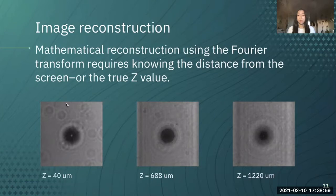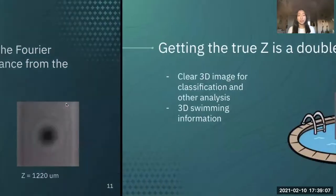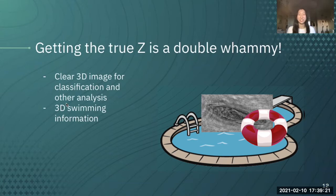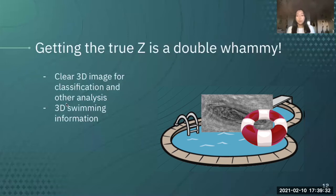On the other hand, if we overestimate the Z value, we could end up with something on the right, which is clearly also not a focused image. Getting the true Z is a double whammy because it allows us to get a clear 3D image which we can use for classification and other analysis. It also gives us the plankton's 3D swimming information. If we track its Z value over time, and we have the XY value from watching it move around the screen, then we can get its swimming patterns, which is also important to understanding plankton health and behavior.